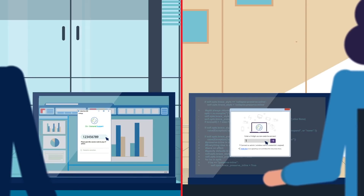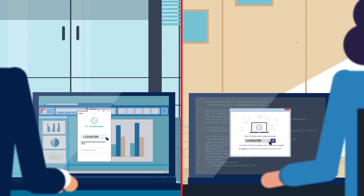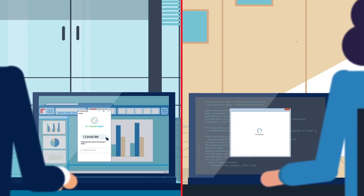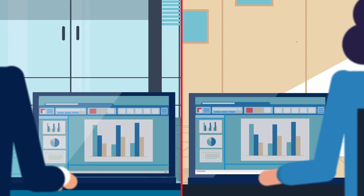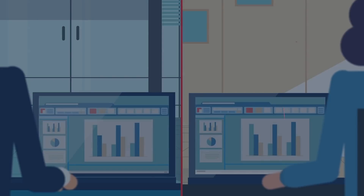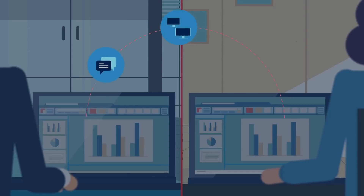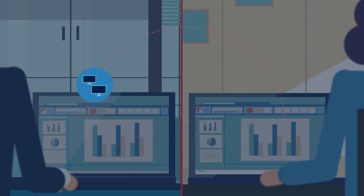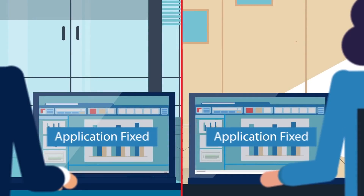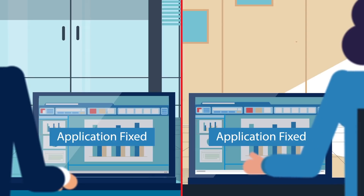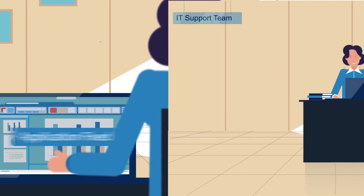Your customer visits SOS.Splashtop.com and gives you their nine-digit code, which you can use to connect to their device instantly. From there, you can take control of the customer's device, transfer files, print remotely, chat, share your screen, and so much more. SOS's powerful platform eliminates lag, ensuring connections are real-time with high-definition quality and sound.